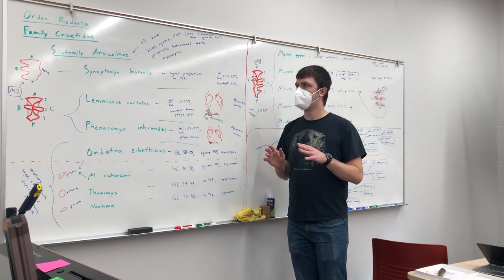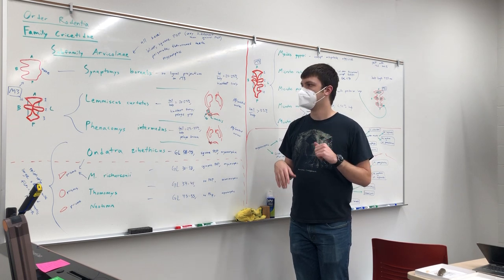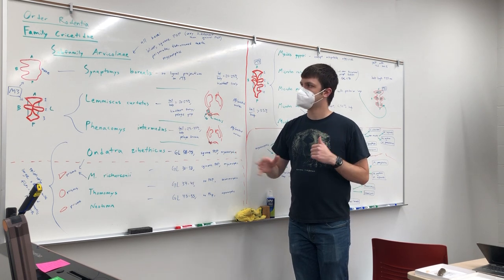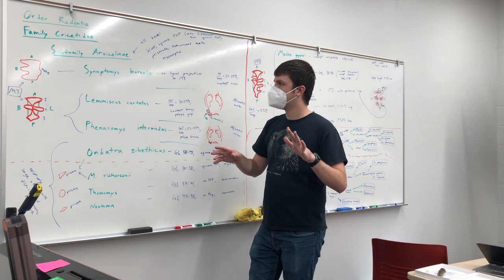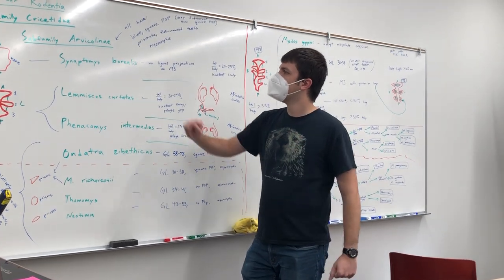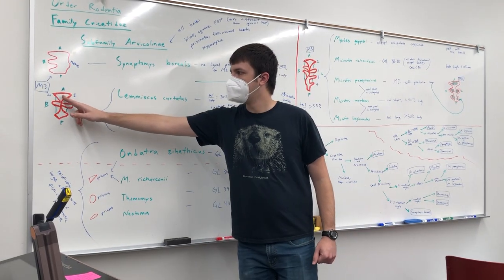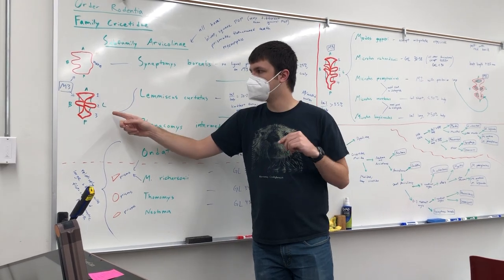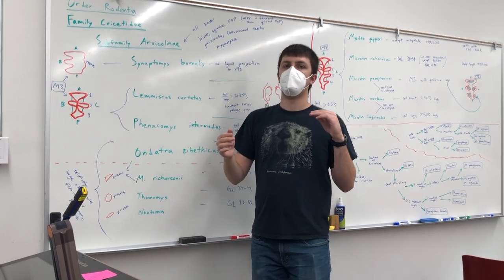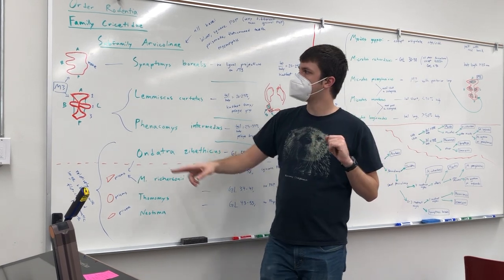In this video, I'm going to go over how to identify arvicolinae, voles, etc. skulls. As I mentioned in my overview video that hopefully you just watched, we can look at the number of reentrant angles, little pokey parts of the tooth sticking inwards towards the tongue, and depending on how many they have, we can categorize them into three main groups.